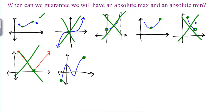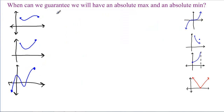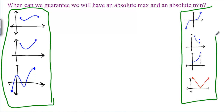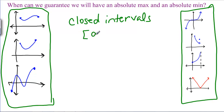What does that mean? It means we can split our graphs into two groups. This group has an absolute maximum and an absolute minimum. This group over here does not. What do all of the functions on the good side have in common? They're all on closed intervals — they all have endpoints, like A to B with closed brackets.